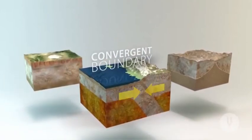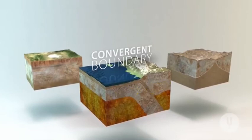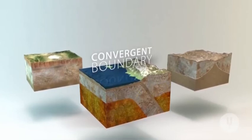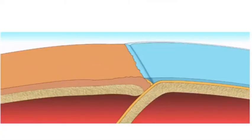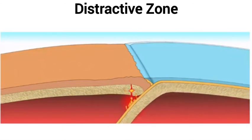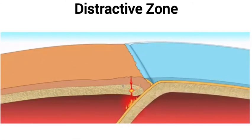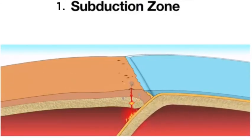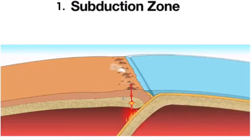Let's now look at convergent plate boundaries. These are plate margins in which plates move toward one another. These plate boundaries are known as destructive zones, and there are two subcategories of convergent plate boundary: the first is the subduction zone, and the second is the collision zone.